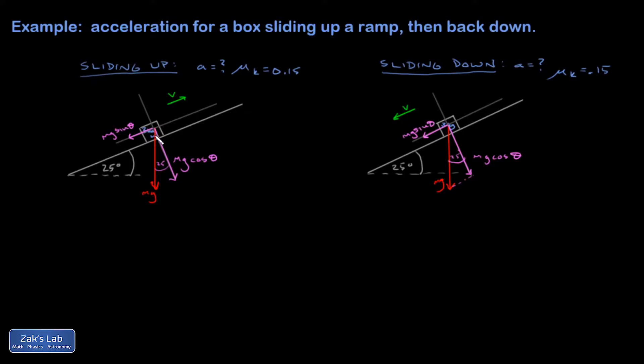And then I have a normal force. This is enforcing the fact that the block is constrained to the surface of the ramp. So there can't be any acceleration perpendicular. So the normal force is going to be equal to mg cosine theta. That's the same in this case as well.